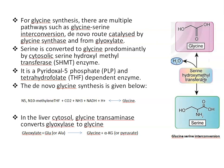Next, de novo glycine synthesis: N5-N10-methylene-THF reacts with carbon dioxide, NH3, and NADH + H+ (the reduced form of NAD+), and glycine is formed. In another pathway that occurs in liver cytosol, glycine transaminase enzyme converts glyoxylate to glycine. Here, glyoxylate reacts with glutamic acid, and glycine and alpha-ketoglutarate or pyruvate are formed.